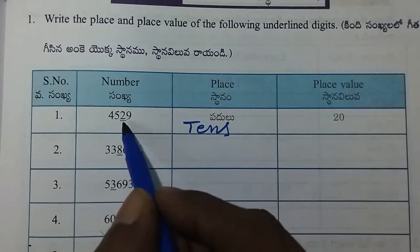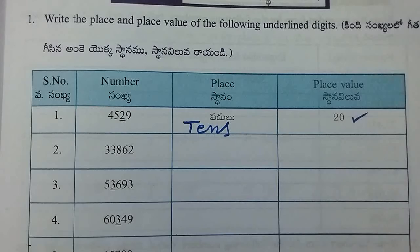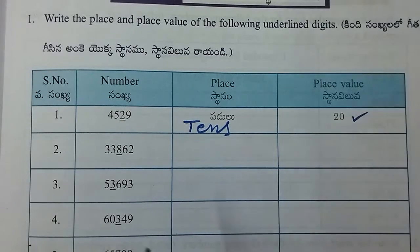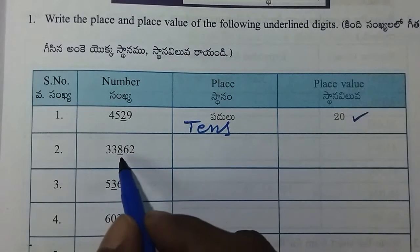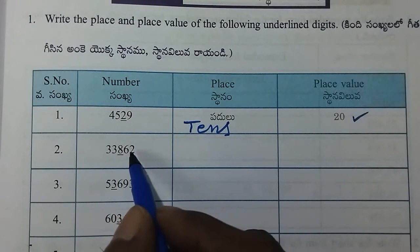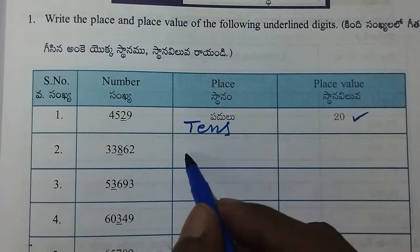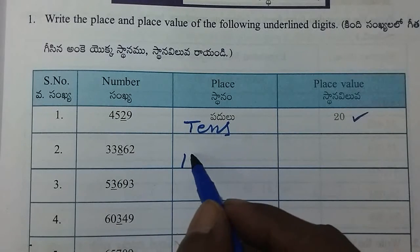So 2 is going to be 20. Next, we have the underline — this is 8. This is 10s. This is 10s. This is 100s.